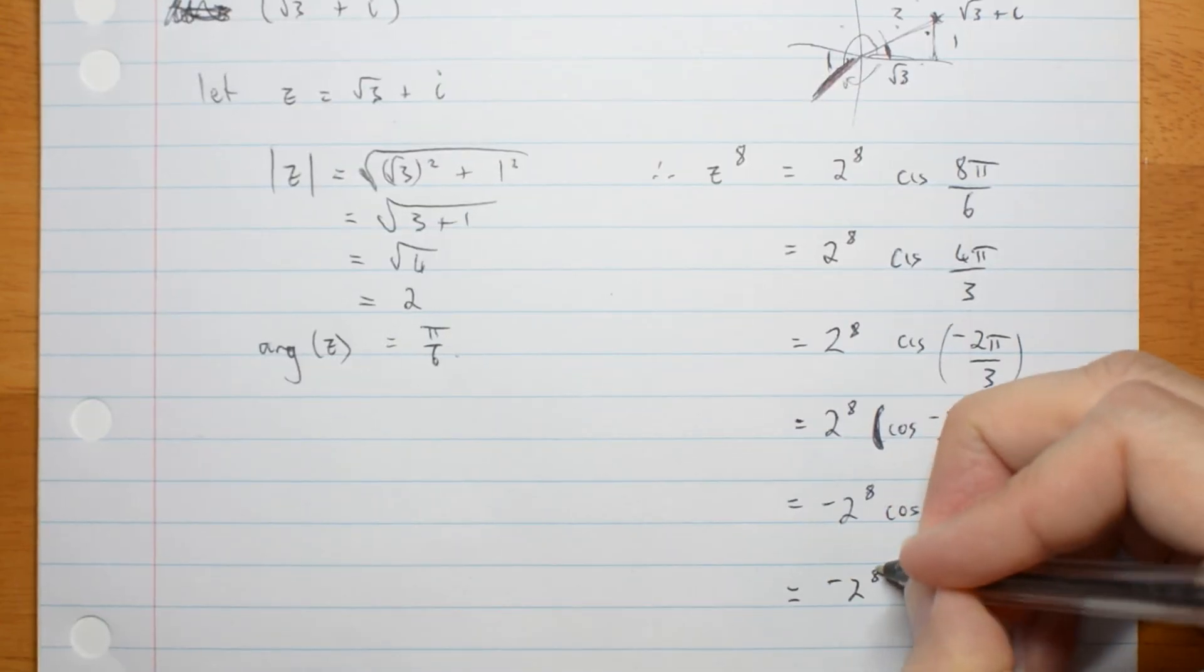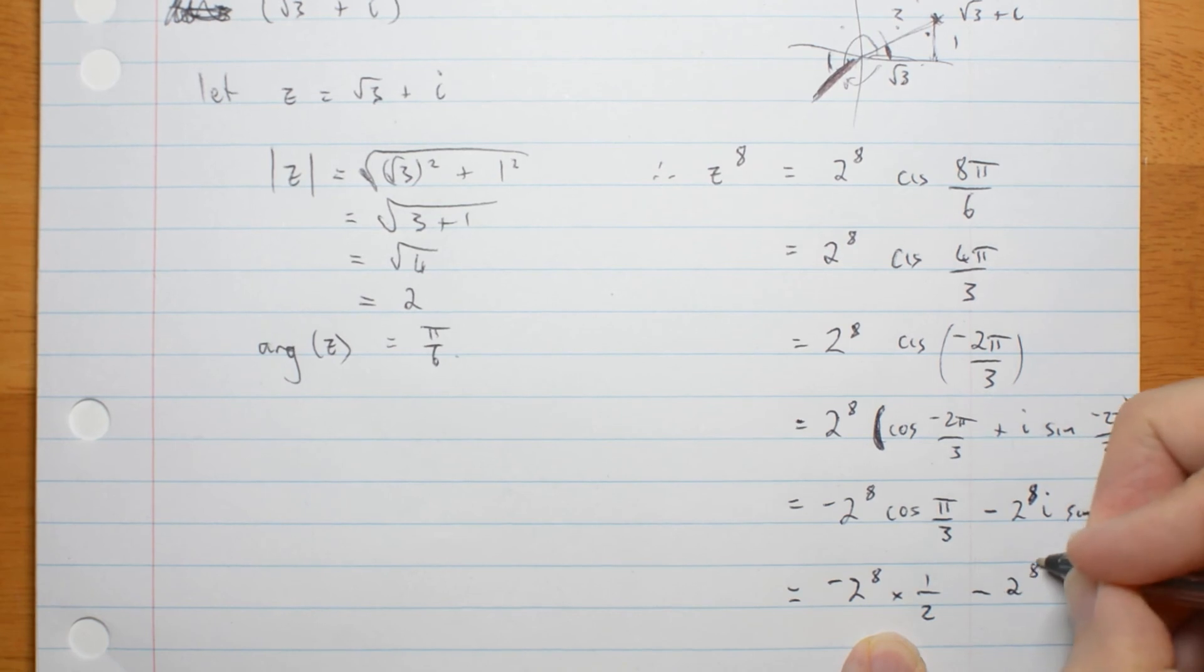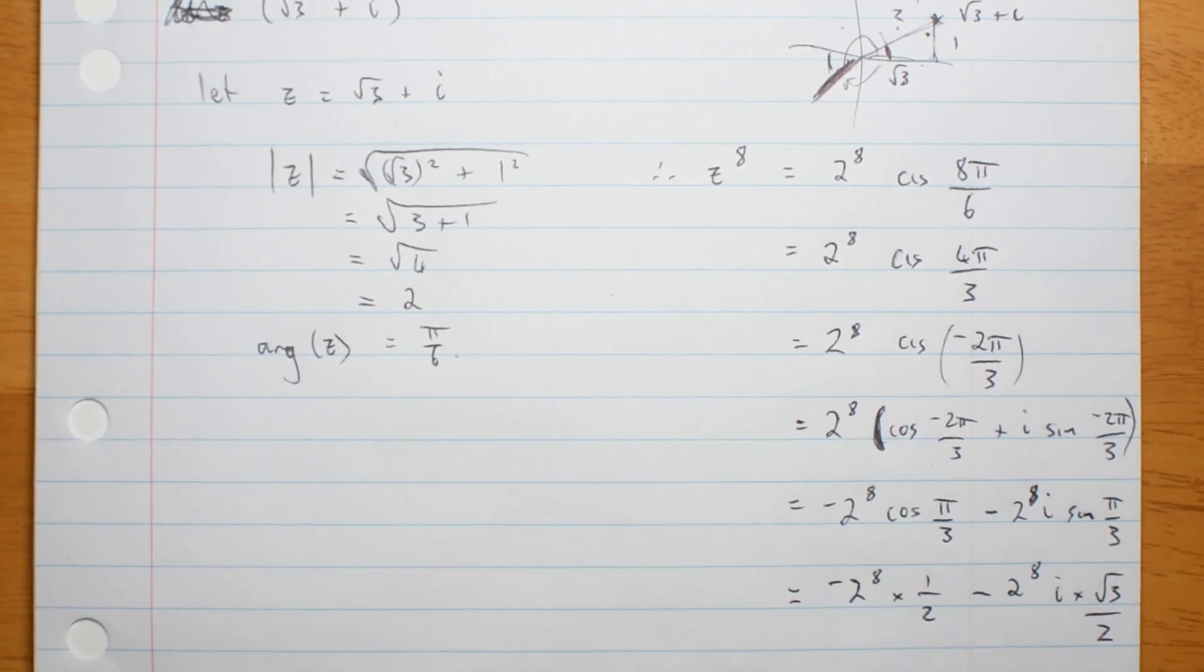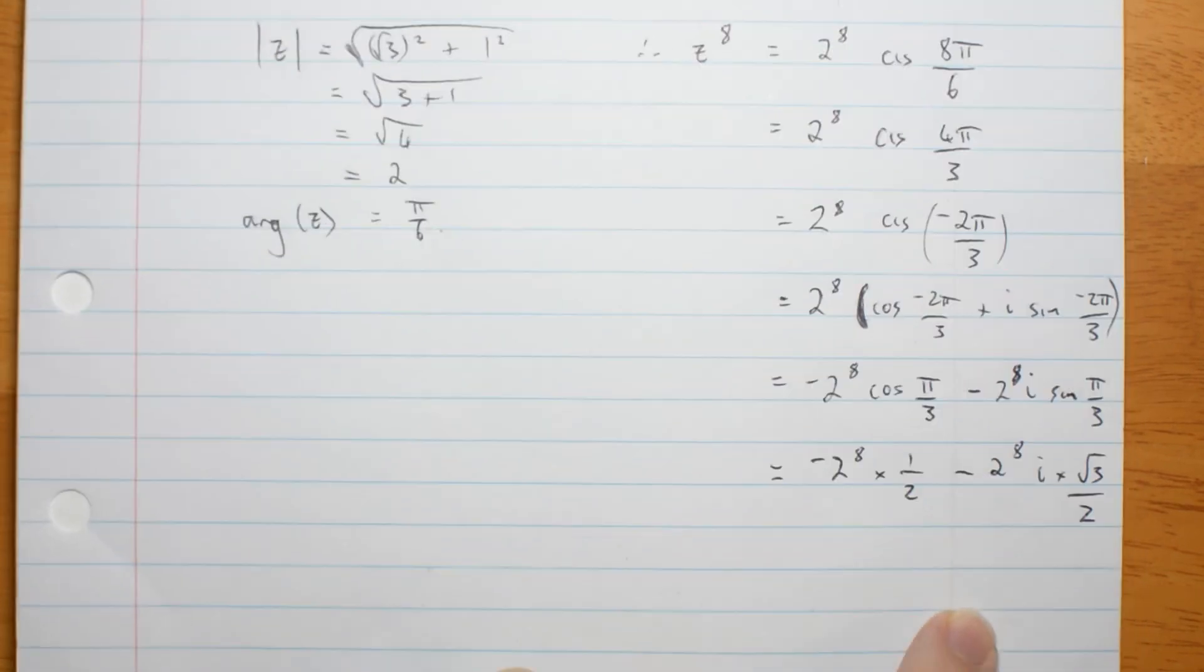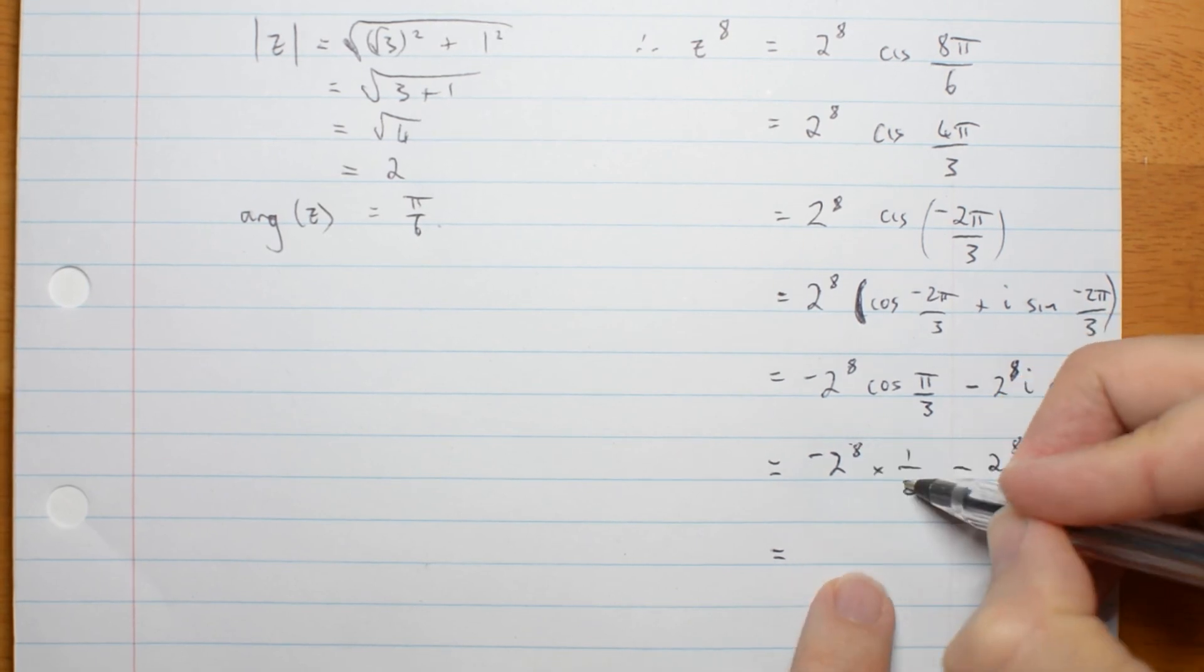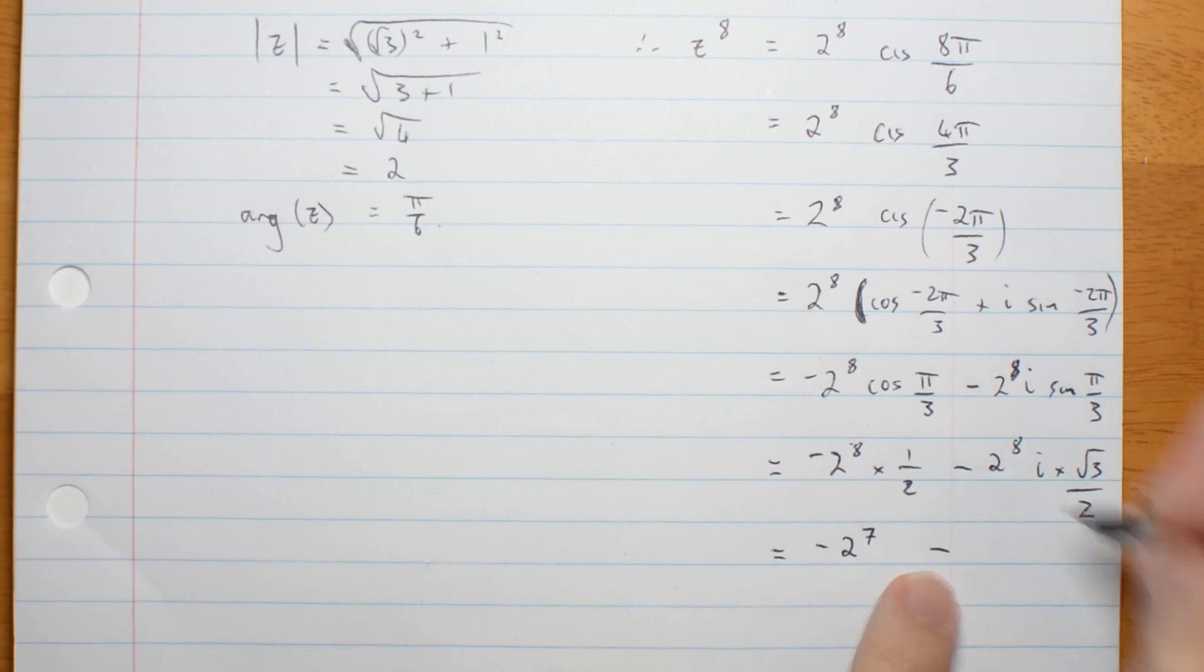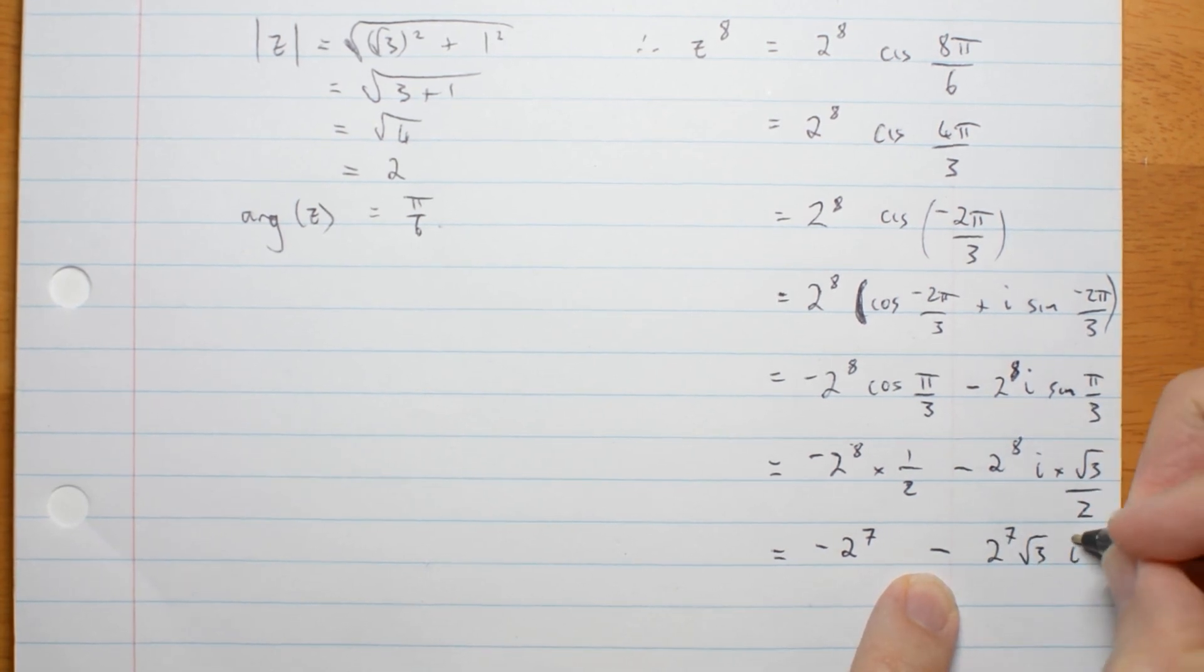So minus 2 to the 8 times a half minus 2 to the 8 i times root 3 on 2. Now, that's a bit disgusting. I can simplify that a little bit. This is actually 2 to the 7 minus 2 to the 7, again, 2 to the 7 root 3 i.